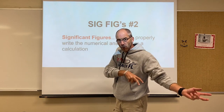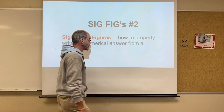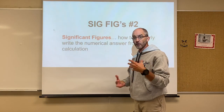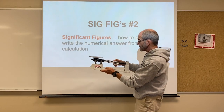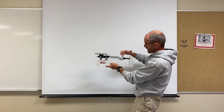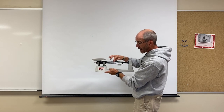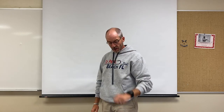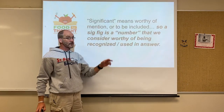Earlier you looked at the first three rules of sig figs. You found the definition of sig figs — in part, how to properly write the numerical answer from a calculation. Sig figs are dependent upon the tool you're using. With a triple beam balance, you might see a measurement like 135.5, which would have four significant figures.